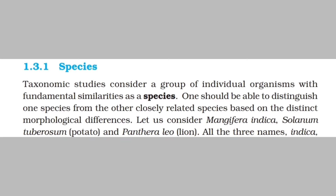The lowest rank of any kingdom is species. Taxonomic studies consider a group of individuals with fundamental similarities — that is, basic similarities in their outlook, morphology, and behavior — as a species. One should be able to distinguish one species from other closely related species based on distinct morphological differences.